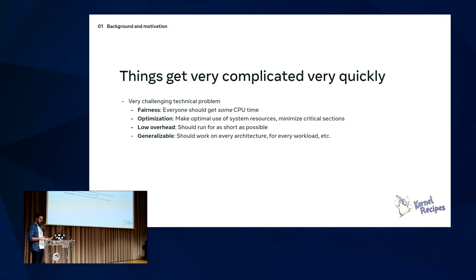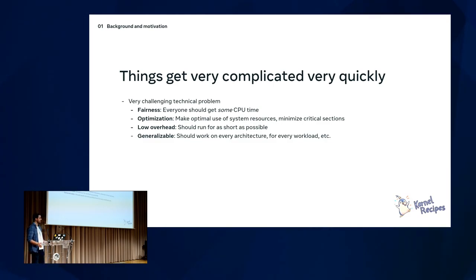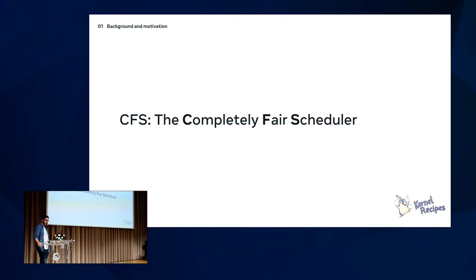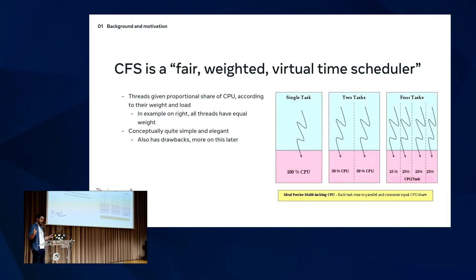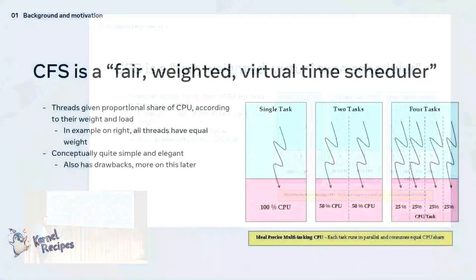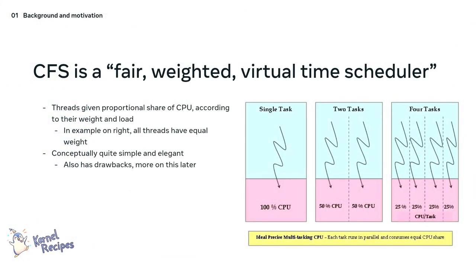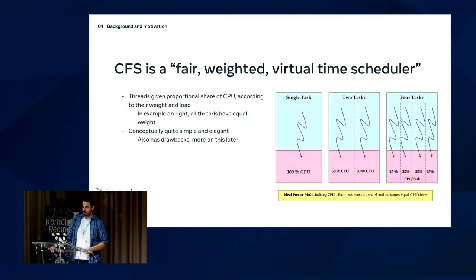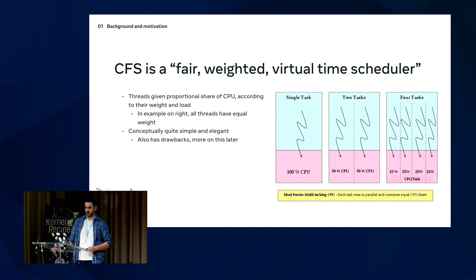Depending on what you're doing, you might want it to be generalizable. CFS needs to work decently well on every architecture and every workload because it's the default scheduler. CFS is a fair-weighted virtual time scheduler — it distributes the CPU according to the load on the system. If you have four tasks with equal weight, they'll each get roughly 25% of the CPU.